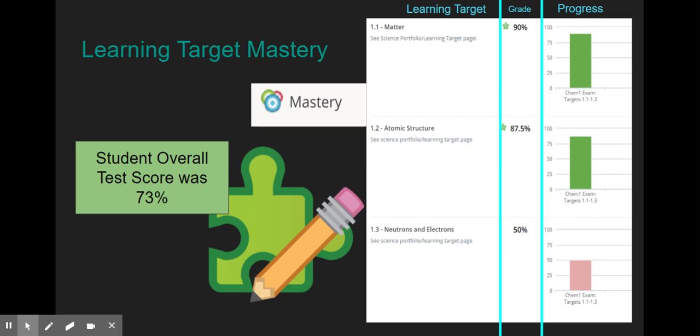So this student for target 1.1 got a 90%. In campus that would translate to a 9 out of 10. On 1.2 this student got an 87.5% and on campus that would translate to an 8.8 out of 10. On target 1.3 this student got a 50%, so that would translate to a 5 out of 10.